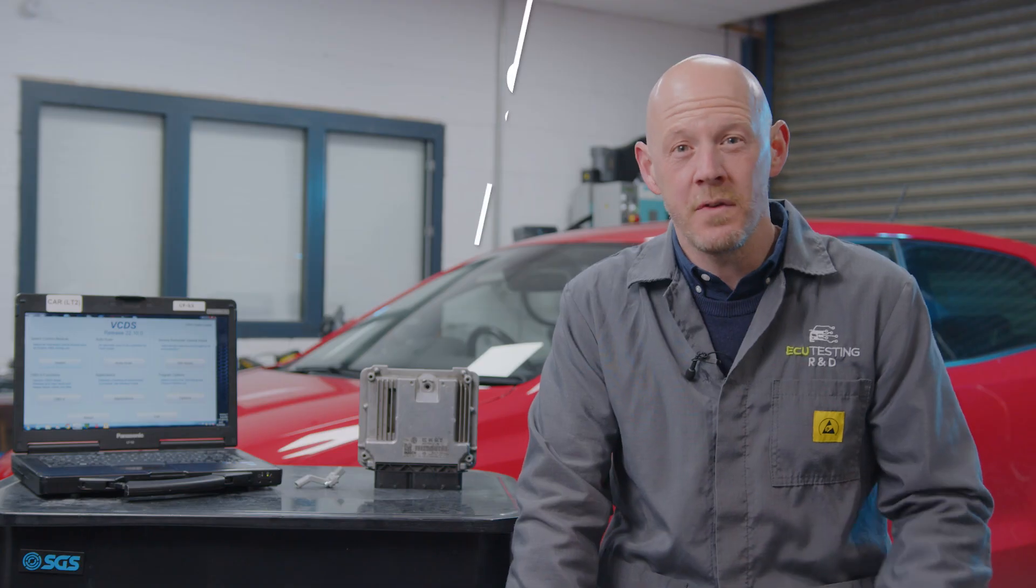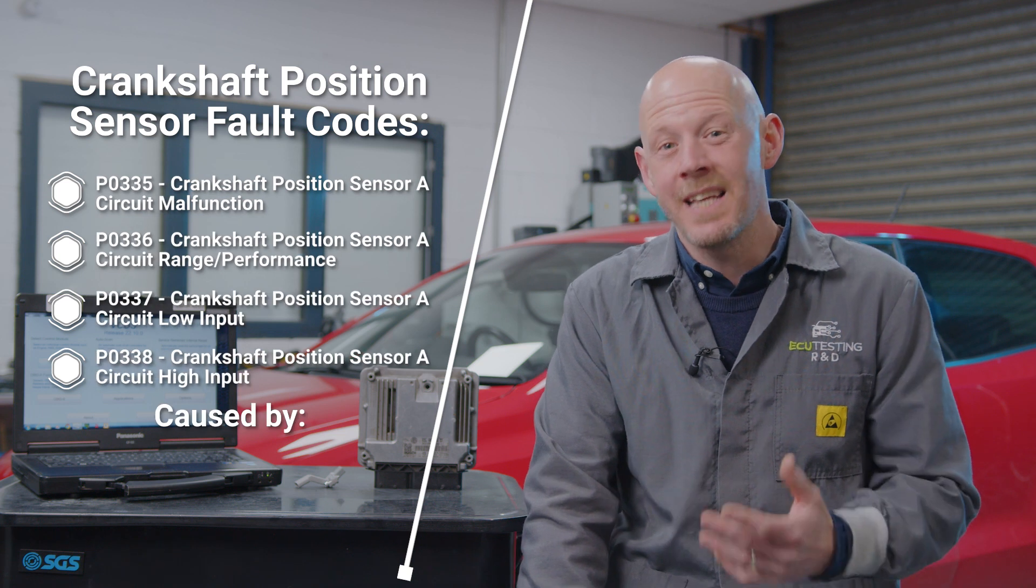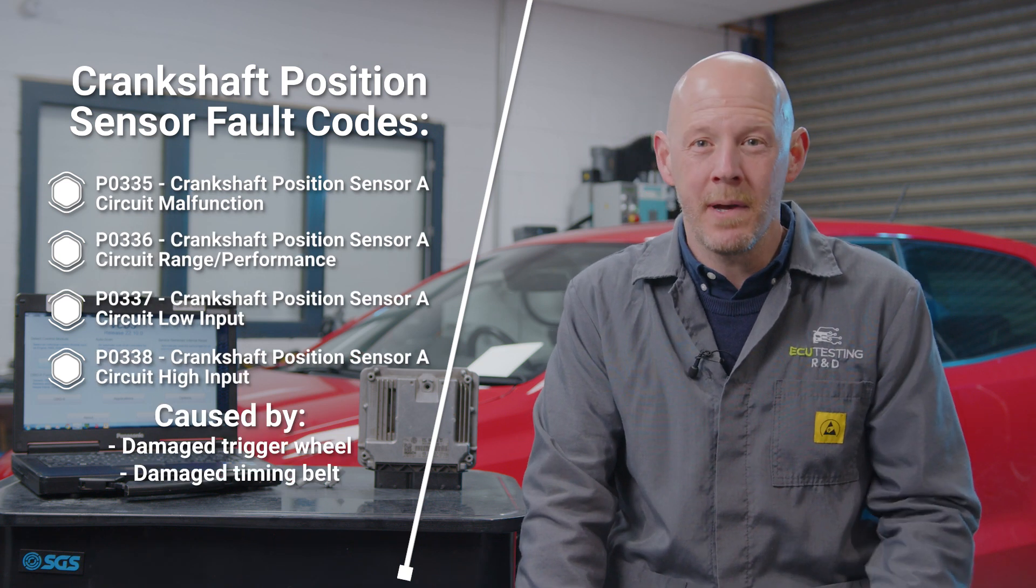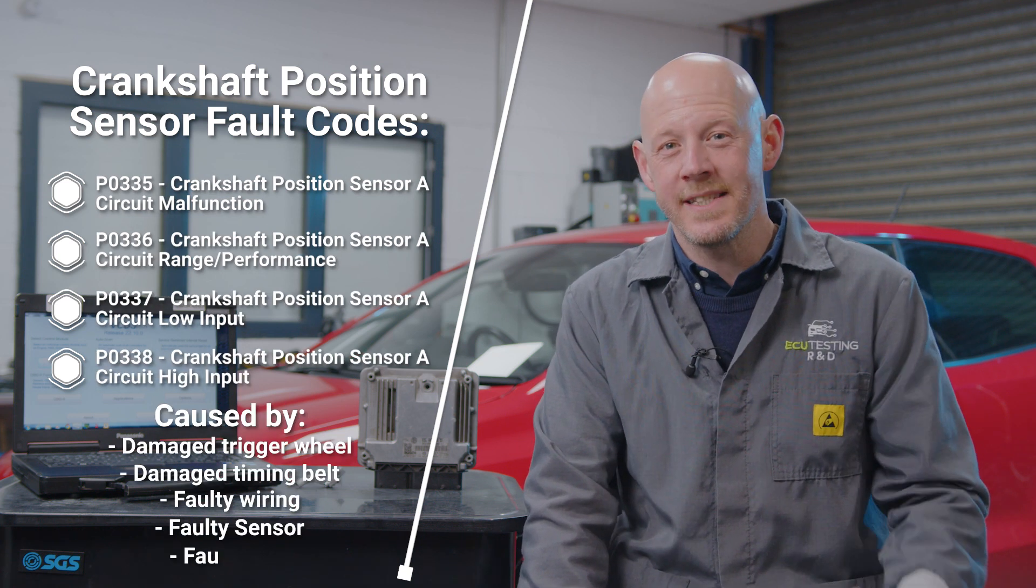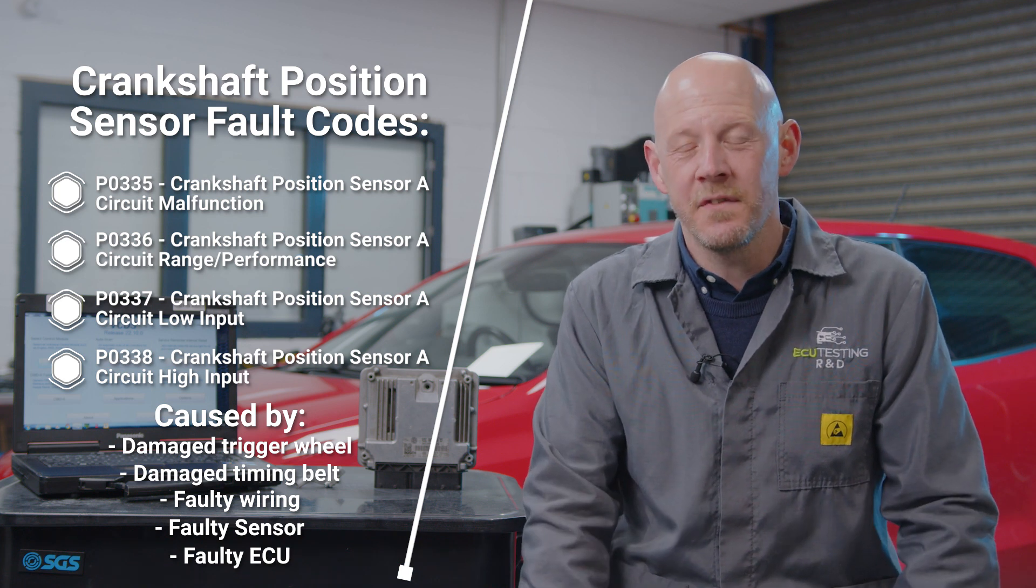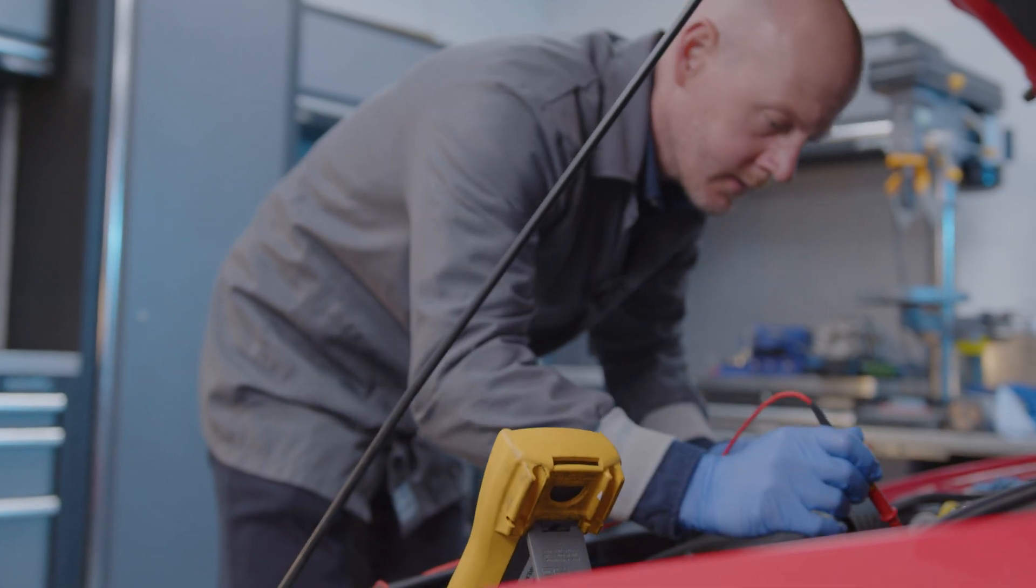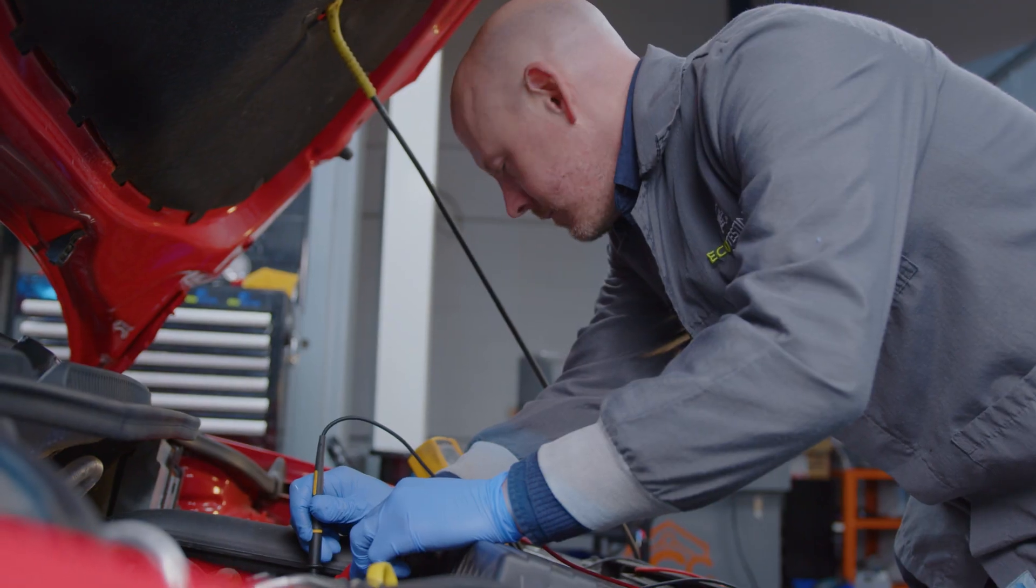There are a fair few things that can cause these codes and symptoms, including a damaged timing trigger wheel, timing belt, wiring, sensor or ECU. But today we're going to focus on how to thoroughly check the crankshaft sensor circuit and identify where a fault could lie.